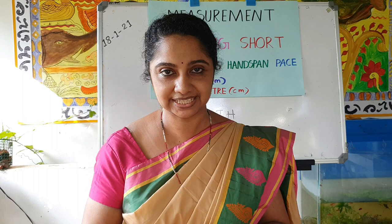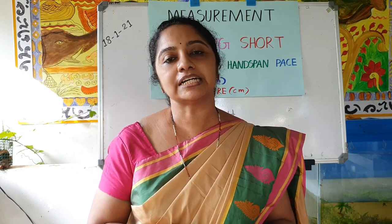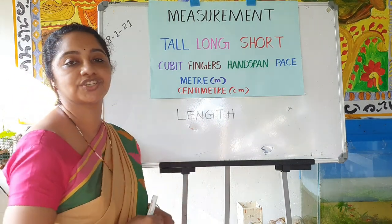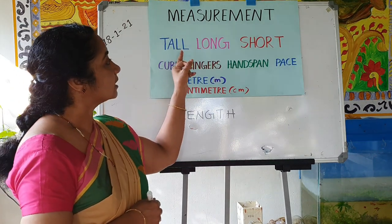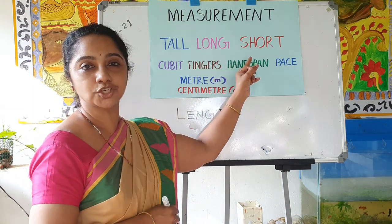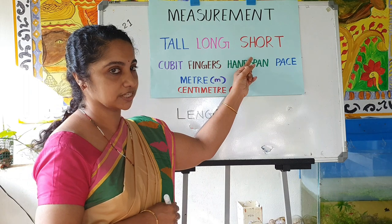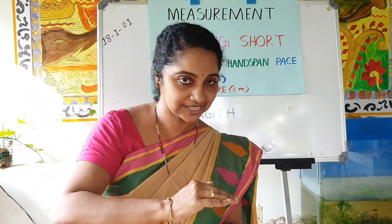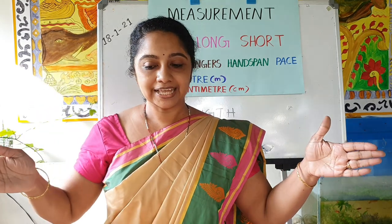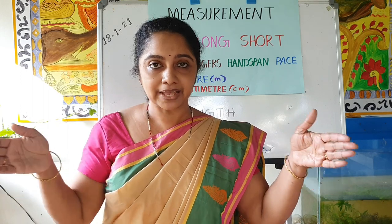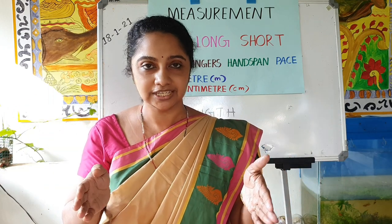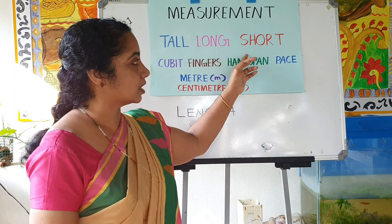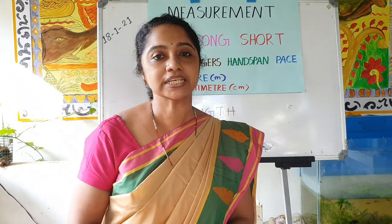Your dresses also have measurement — tailors take measurement before stitching a dress. Everything has measurement. Today we are going to learn about measuring length. L-E-N-G-T-H. For measuring length we use the words: tall, long, and short. Tall represents height — a tall giraffe, a short dog. Long and short are terms that represent length.